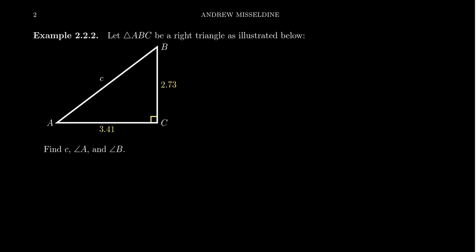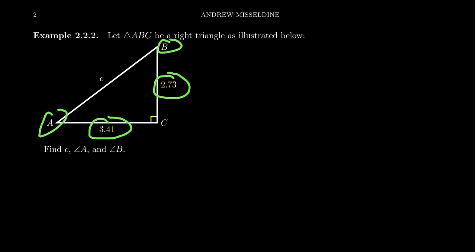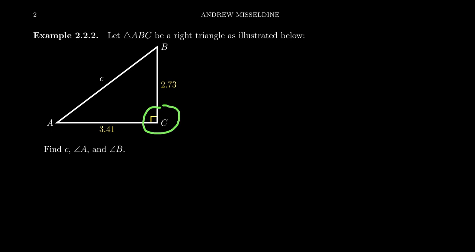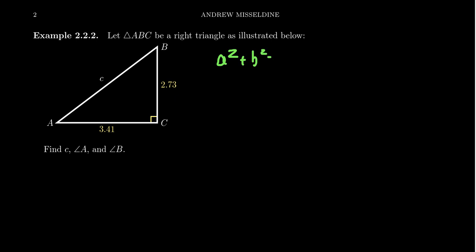Let's do one more example. This time we know two sides: side a and side b. We don't know side c or angles A or B. We know angle C is the right angle, so side c is the hypotenuse. Since I know two sides, I'll use the Pythagorean equation.